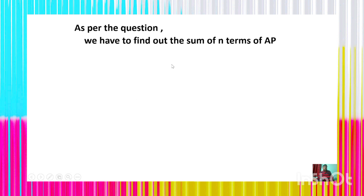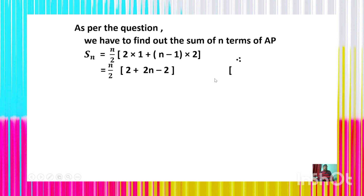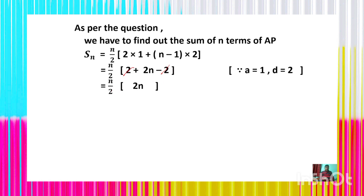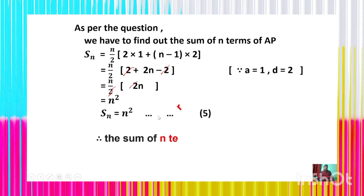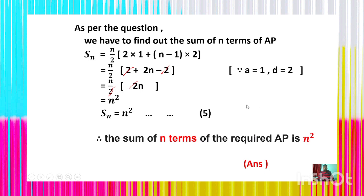Now we find the sum of n terms of the AP. Sₙ = (n/2)[2×1 + (n−1)×2] since a = 1 and d = 2. This gives (n/2)[2 + 2n − 2]. The +2 and −2 cancel, giving (n/2)(2n). The 2 in the numerator and denominator cancel, leaving n². Therefore Sₙ = n². The sum of n terms of the required AP is n².